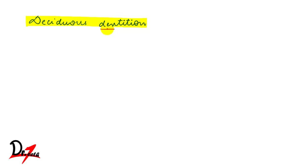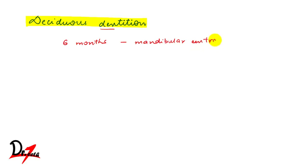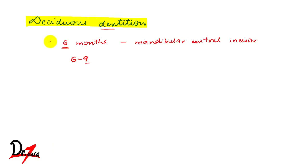Let's see what happens in the deciduous dentition period. We studied in the last video that the first teeth erupt at six months of age — the mandibular central incisor. The age of eruption is six months, but it can vary from six to nine months. So even if the child's first teeth erupt at nine months, that is also normal.